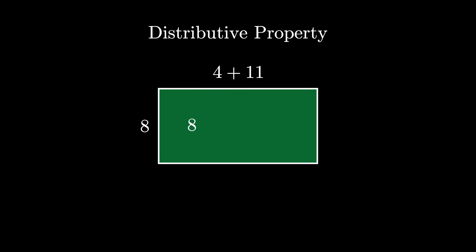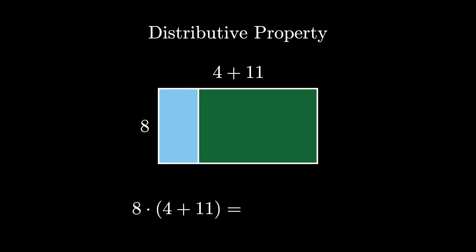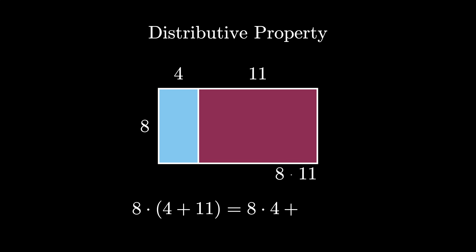Notice there is nothing special about the numbers 5, 3, and 6. Here we do the same thing but use the numbers 8, 4, and 11 to get that 8 times the quantity 4 plus 11 equals 8 times 4 plus 8 times 11. Note that the side lengths don't have to be to scale in this pictorial representation.